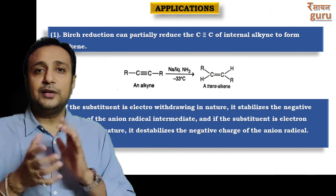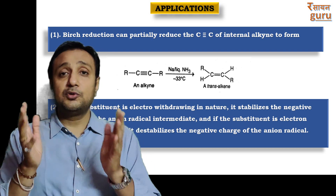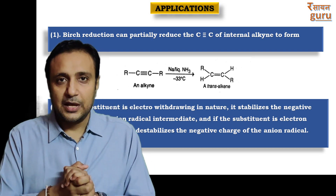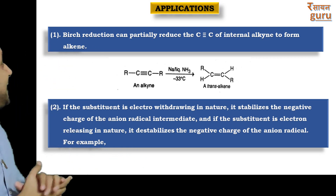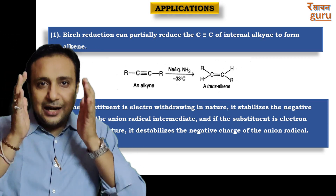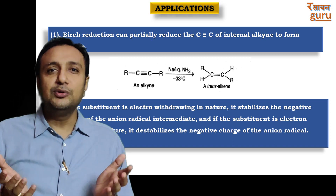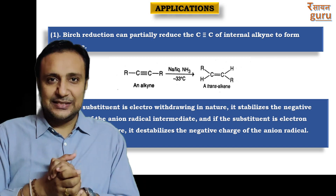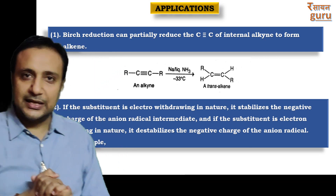The next part of the reaction is the application — this is the most important part for industrial purposes. In the first application, when an alkyne undergoes Birch reduction, it produces a trans-alkene. The reaction is shown on your screen.